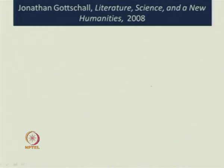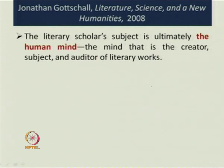Let me begin with a reference to Jonathan Gottschall's Literature, Science and New Humanities. The title points to a new humanities based on a scientific and systematic way of looking at texts. Reading from this text, Gottschall says that the literary scholar's subject is ultimately the human mind — the mind that is the creator, subject, and auditor of literary works. Many schools of literary criticism vary in their focus: Marxism looks at the socio-cultural and economic and sees the literary text as part of the superstructure.